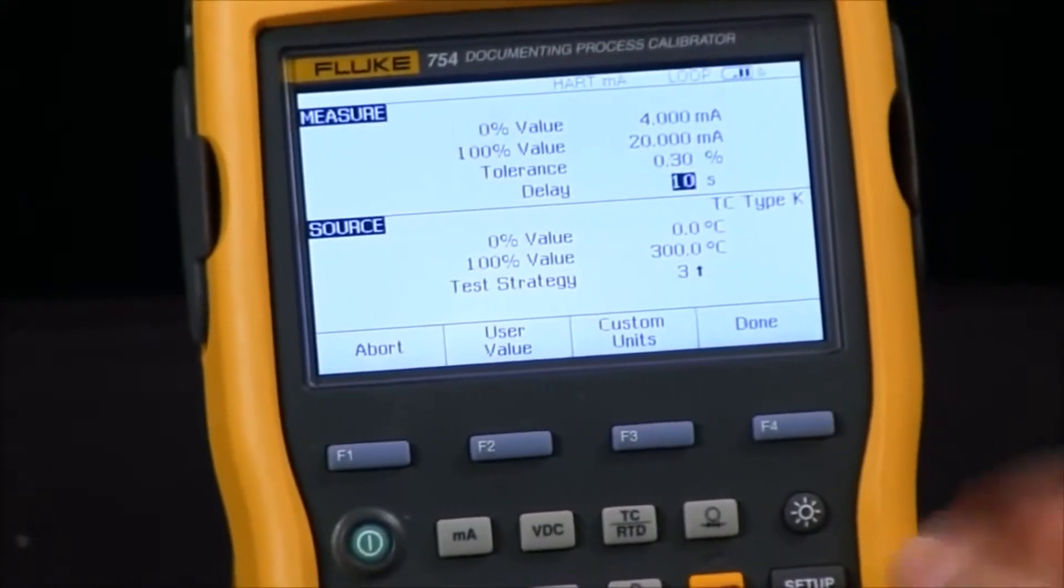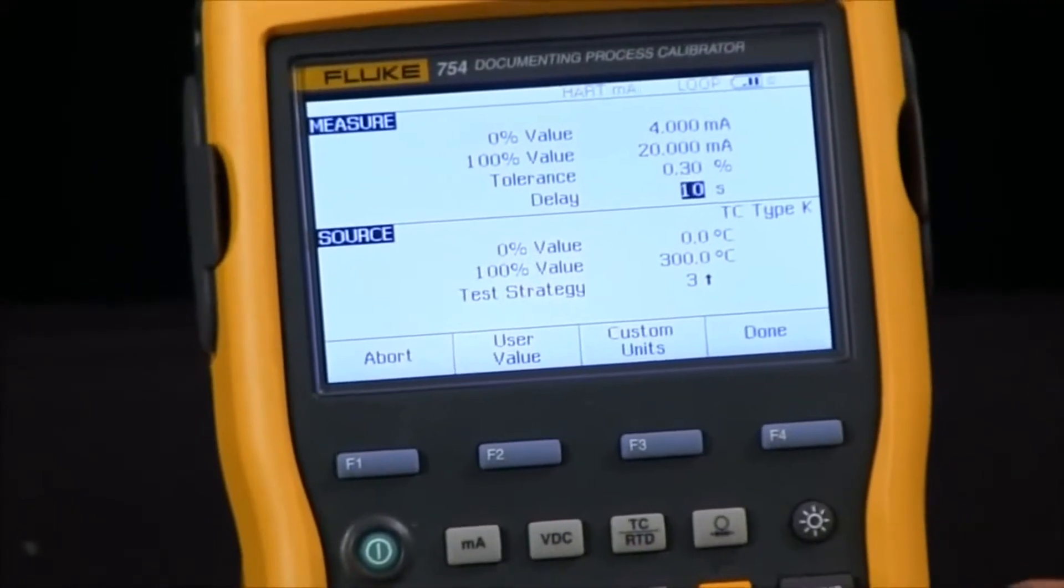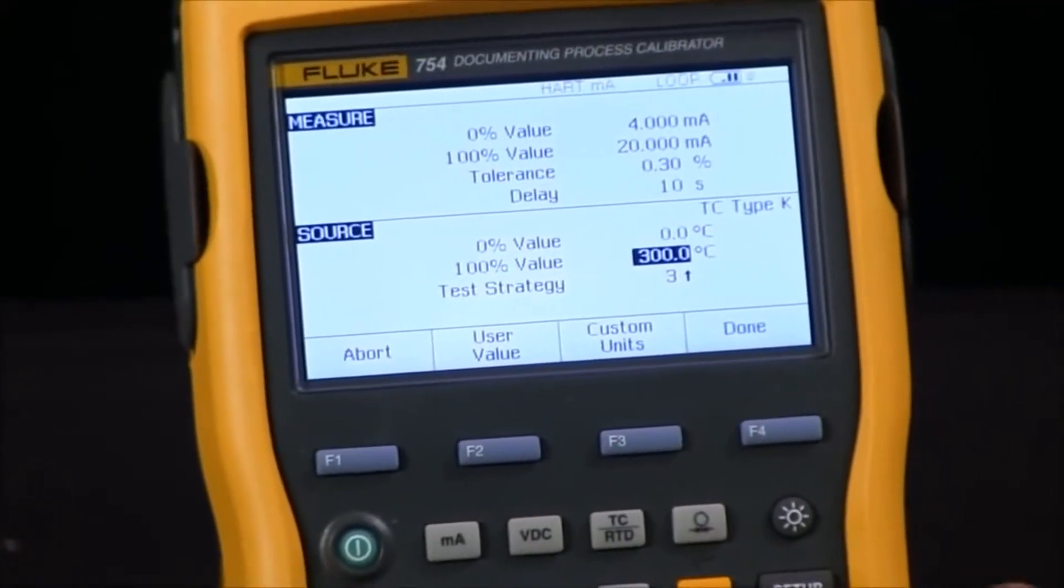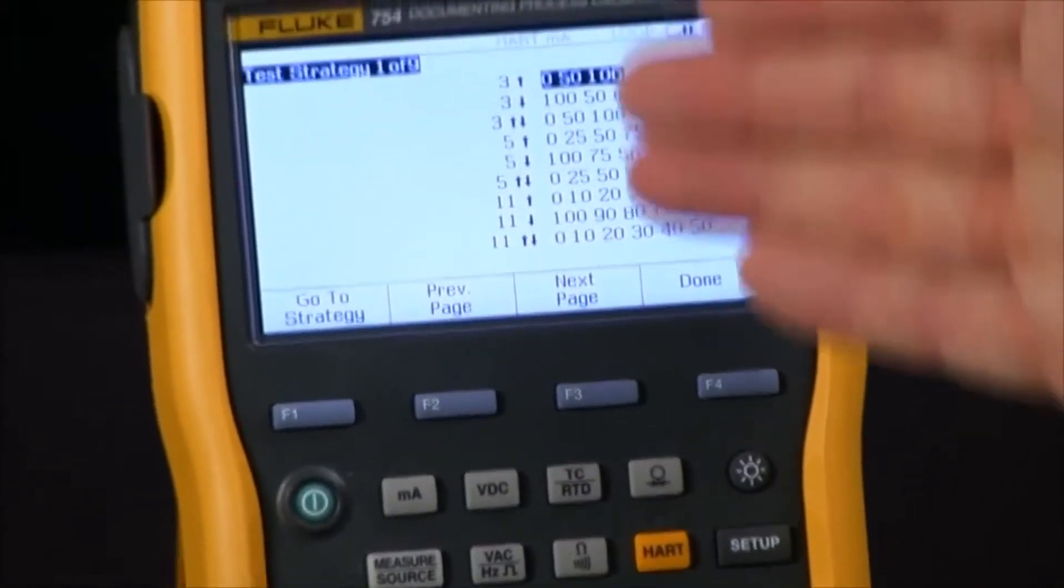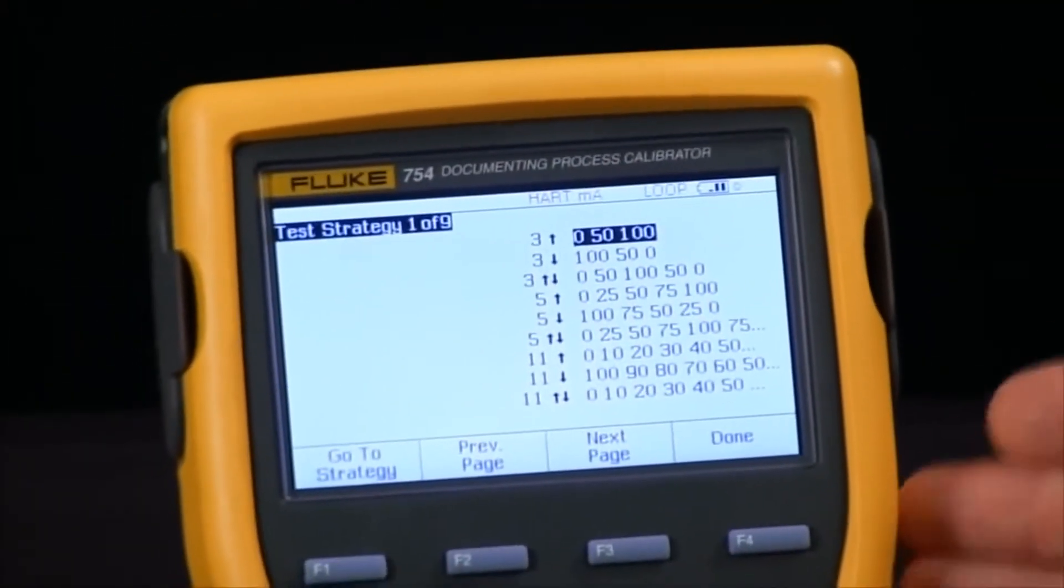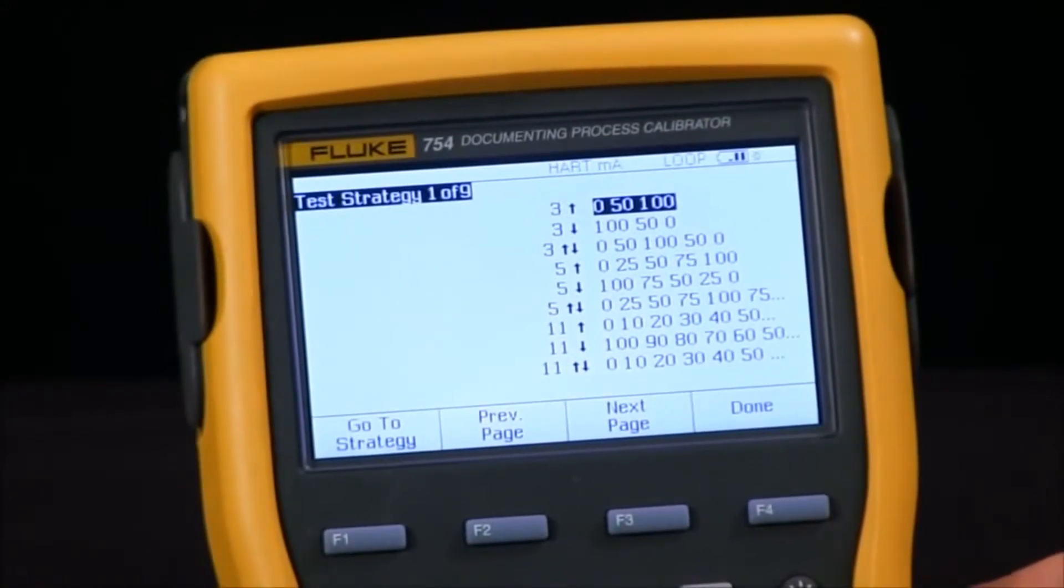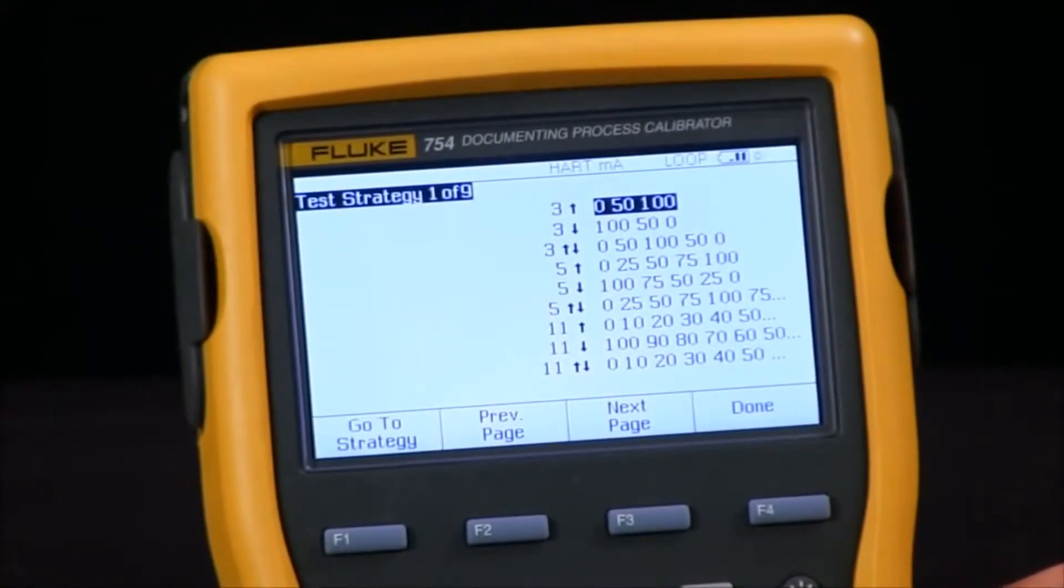My delay I can set to anything. I will leave it at 10 seconds and there's my 0% and my span values. What kind of test do I want to do? I have a selection from a 3 up 3 down all the way up to an 11 up and down or I can select any specific test called out by the manufacturer or by my specific process.